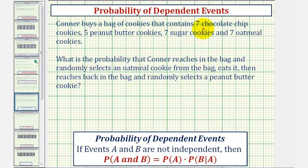Connor buys a bag of cookies that contains seven chocolate chip cookies, five peanut butter cookies, seven sugar cookies, and seven oatmeal cookies.